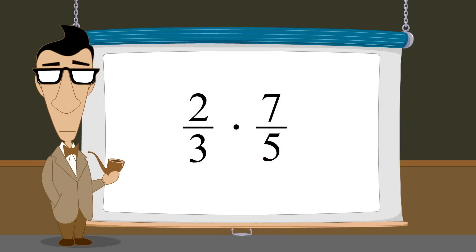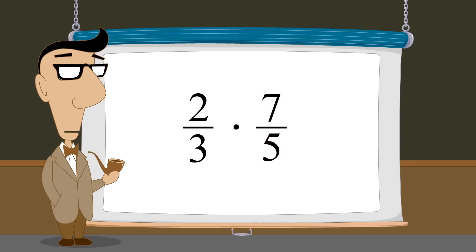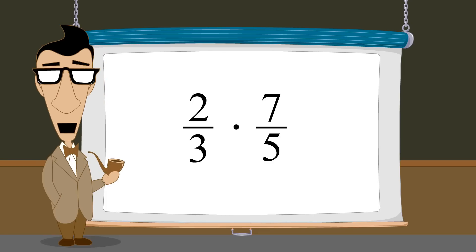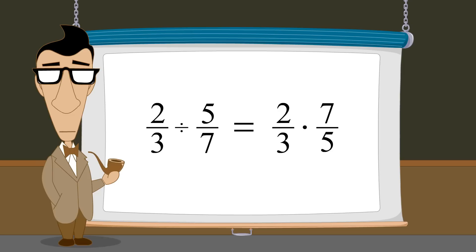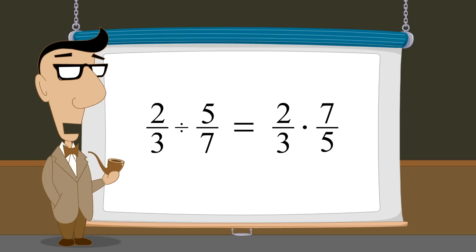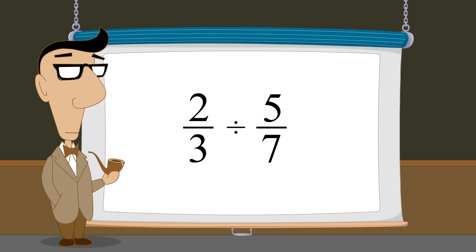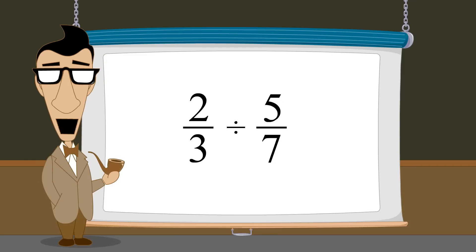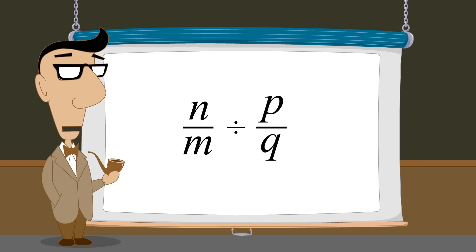We have shown that if we wish to divide by a fraction, we simply multiply by the reciprocal of that fraction. But will this always work for any fraction? Maybe we were just lucky picking numbers in our examples which happen to work. We can prove this will always work if we can show that dividing by a fraction is always equivalent to multiplying by the reciprocal of that fraction. Instead of using specific numbers, we will use letters which can represent any number. We will divide a fraction n over m by another fraction p over q. Now n, m, p, and q can be any integer, except that since a fraction's denominator can never be zero, m and q can't be zero. Also, p can't be zero, since this would make the fraction p over q equal to zero, and we can't divide the first fraction n over m by zero.